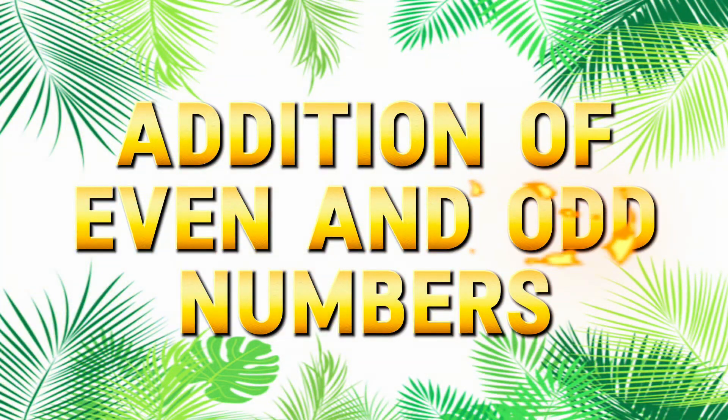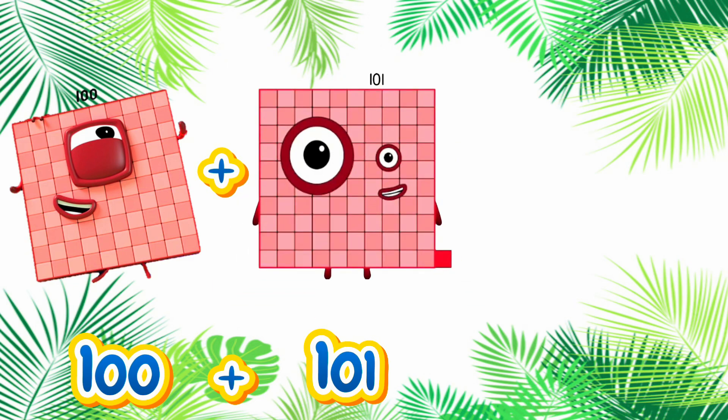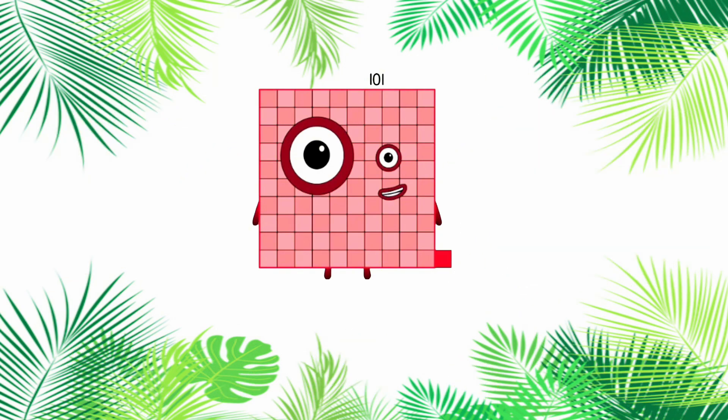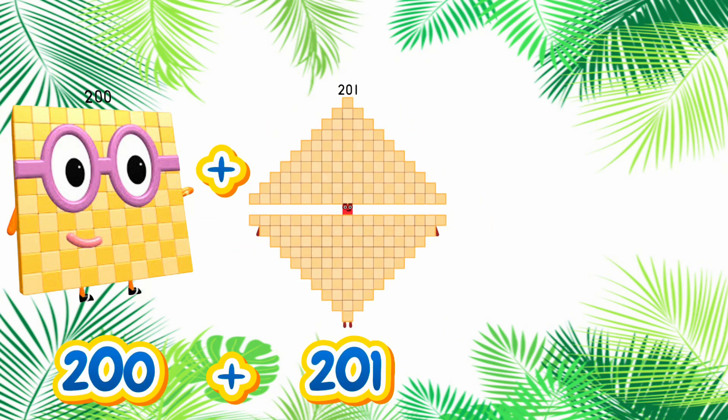Addition of even and odd numbers. 100 plus 101 plus 102 equals 303. 200 plus 201 plus 202 equals 603.